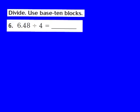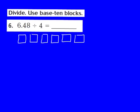Now let's take a look at question number 6 together. Our job is to divide, and we're going to use base 10 blocks to help us model this division problem. Our problem for number 6 is 6 and 48 hundredths divided by 4. Step number 1 says draw a quick picture to represent the dividend. In this problem, our dividend is 6 and 48 hundredths.